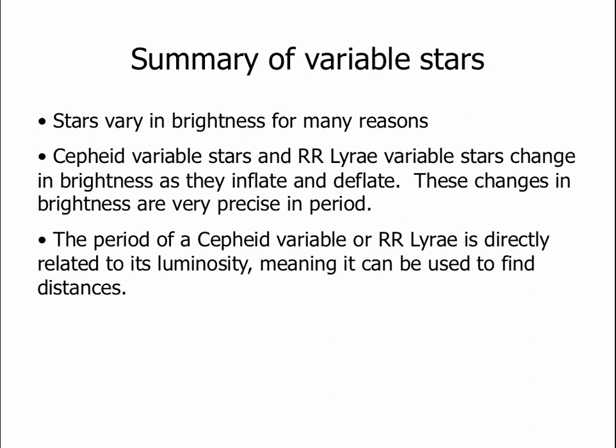So to summarize variable stars: there are many different reasons that stars vary in brightness, but two closely related classes are the Cepheid variable stars and the RR Lyrae stars. These change in brightness as they inflate and deflate, and these changes are very precise in period — it takes a given star the same amount of time to complete a cycle each time. The period is related to its luminosity, so if we can measure the period we can get the luminosity, and based on the luminosity and how bright the star appears we can find the distance to the star.